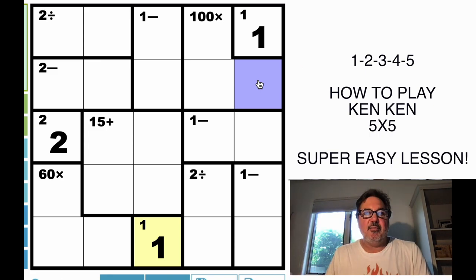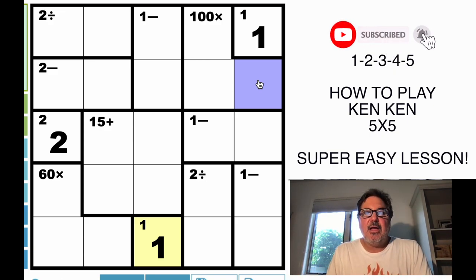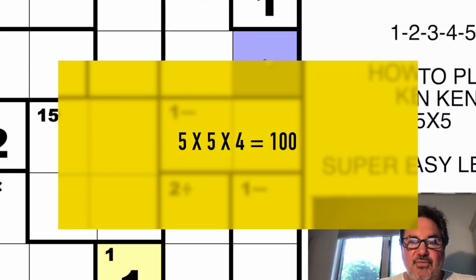So let's talk about all the combinations that give us 100 using 1, 2, 3, 4, and 5. And the truth is there really is only one way to get to 100. And that is 5 times 5, which is 25, times 4.